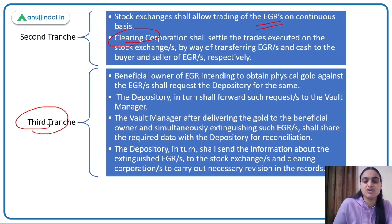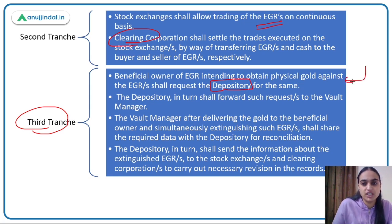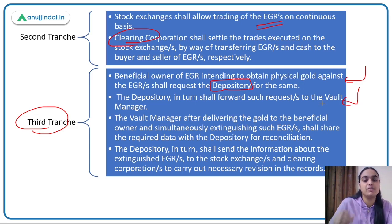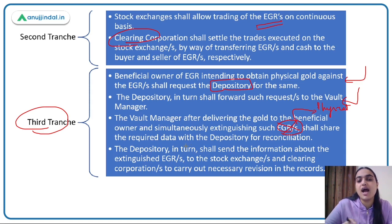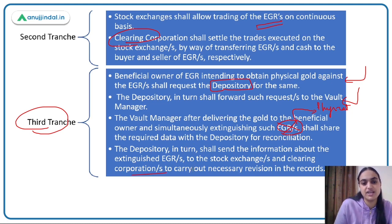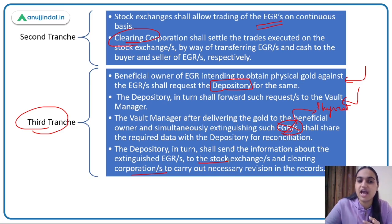In the third tranche, if the EGR owner wants back the physical gold, they request the depository, which informs the vault manager. The vault manager hands over the physical gold and extinguishes the corresponding EGR. This data is shared between the vault manager, depository, stock exchange, and clearing corporation, ensuring proper records of EGR creation and cancellation. SEBI regulates all of this.